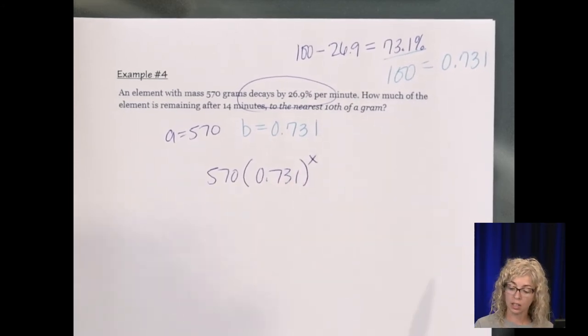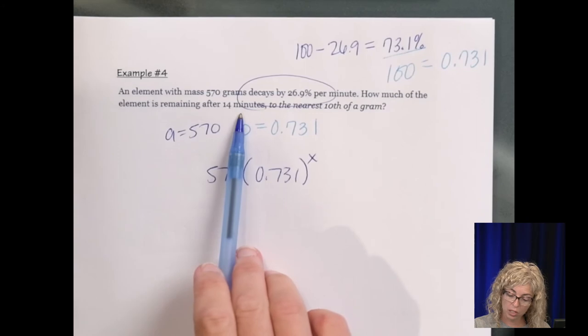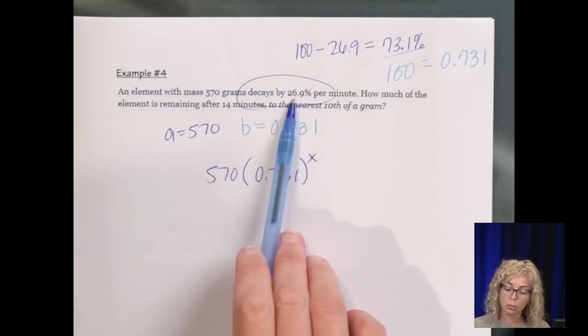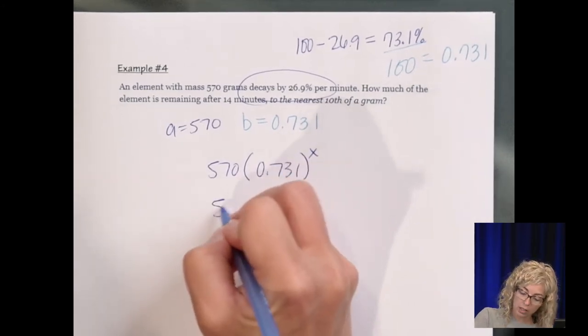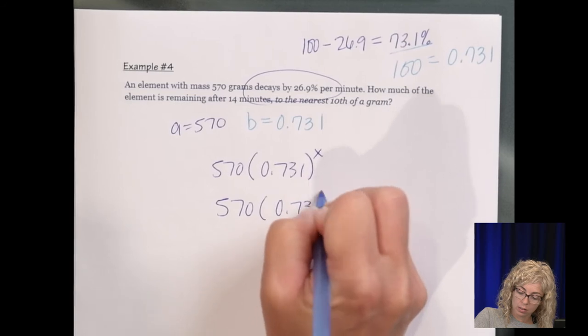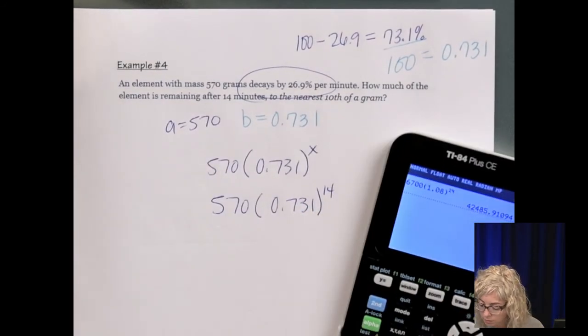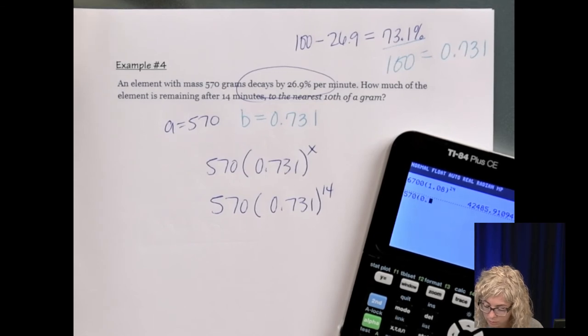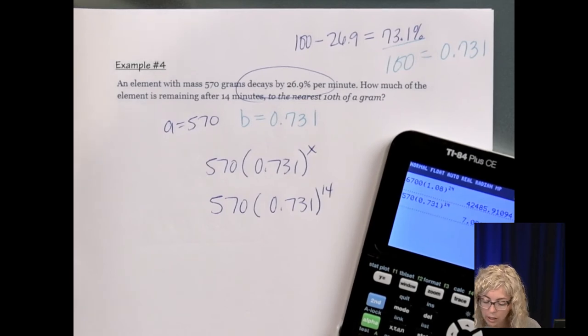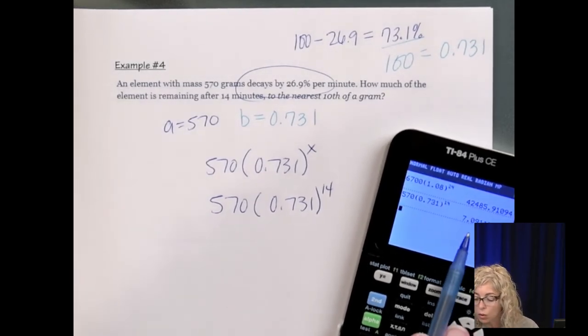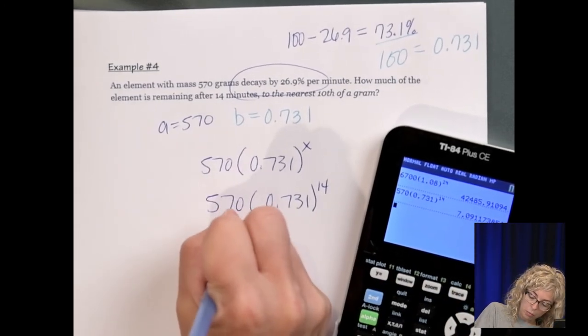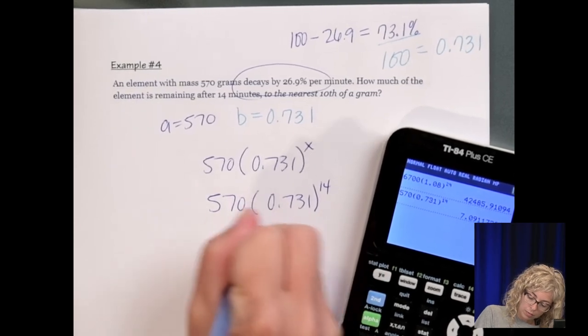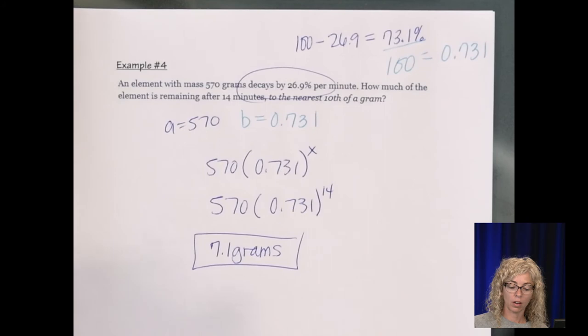So we have 570 times 0.731 to the X. Now we're going to take a look at this, how much of the element is remaining after 14 minutes. So it was decaying this much per minute. So my X represents the number of minutes. So I just plug in the 14. Type it in the calculator. And we're rounding to the nearest tenth of a gram. So that's the zero. And to the right of the zero is a nine. So my answer would be 7.1 grams.